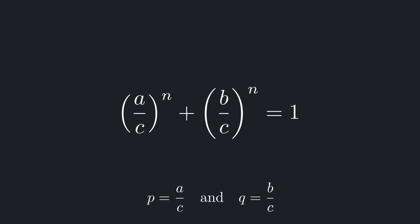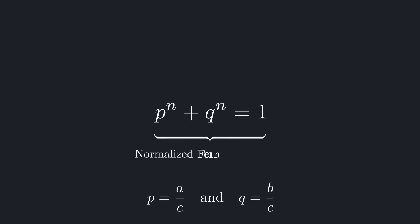Now let's define p equals a over c and q equals b over c. With this substitution, the equation becomes much simpler: p to the n plus q to the n equals 1. This is the normalized Fermat equation.